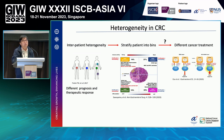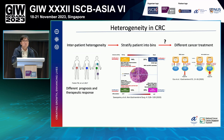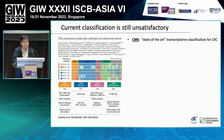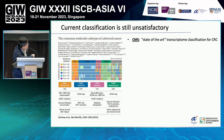Unfortunately, CRC is a very heterogeneous disease. There are many different subtypes of CRC, and these different subtypes have different prognosis and also different therapeutic responses. Because of this, a lot of effort has been done recently to stratify patients into groups so we can treat them differently. The consensus molecular subtype, or CMS, is currently the state-of-the-art transcriptomic classification for CRC, dividing CRC into four different subtypes.